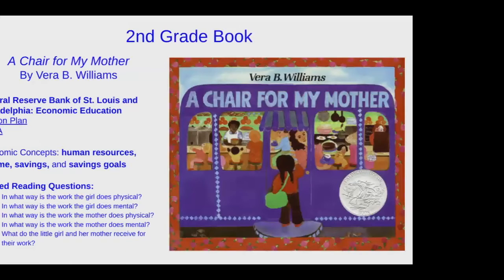The next book is A Chair for My Mother by Vera Williams. This book has been used a lot in classrooms — it's won many awards and is overall a great book. The economic concepts include human resources, income, savings, and savings goals. Basically in this story, the child is at work with her mother and they are going through situations where the child has to understand the difference between income and savings and work, as well as physical versus mental work. This book really helps introduce those concepts to students.